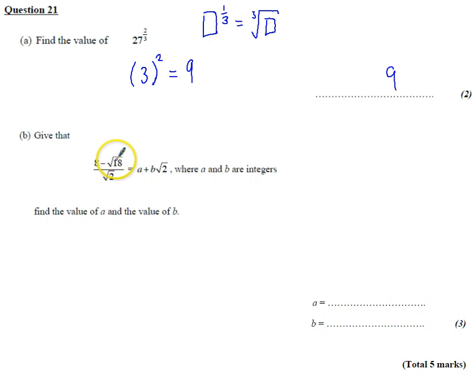Part B is the surds bit. I've got 8 minus root 18 over root 2. I'm going to multiply this by the number 1, because then I don't change its value. But I want to rationalize the denominator.